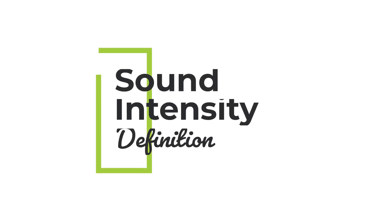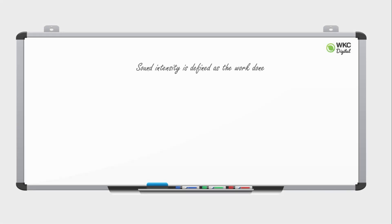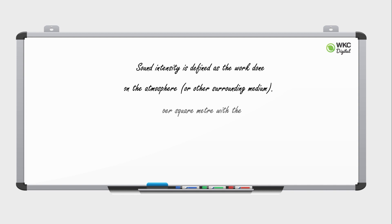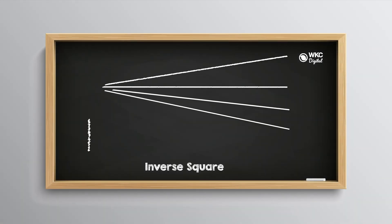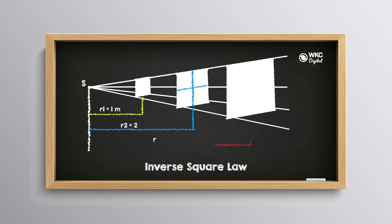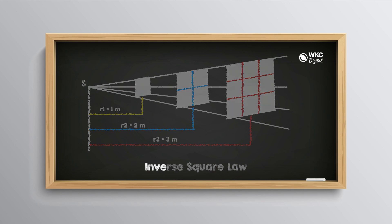How loud a sound is therefore depends on the intensity of the sound. Sound intensity is defined as the work done on the atmosphere, or other surrounding medium, per square meter, with the corresponding units of watts per meter squared. If you conceptualize a sound wave emitted from a source, in a simplified setting it is essentially a spherical or hemispherical wave that moves away from the object in all directions uniformly, with an increase in surface area as it propagates.